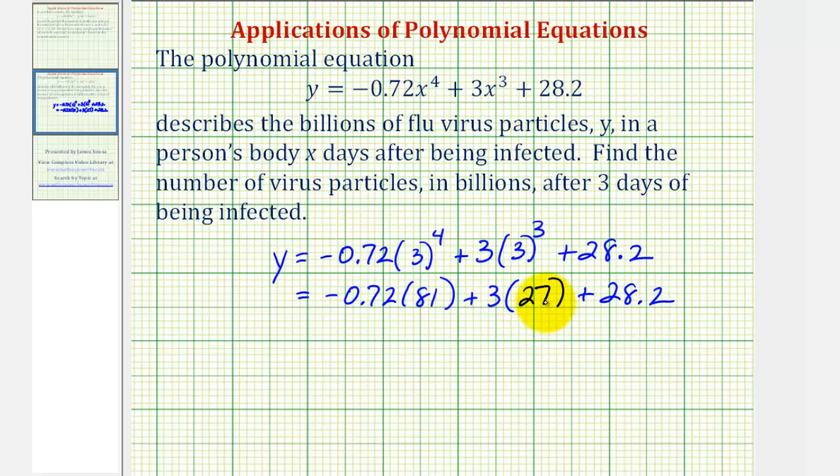Next, we would multiply and then add and subtract from left to right. So for the next step, we'll find this product and this product, and then find the sum.